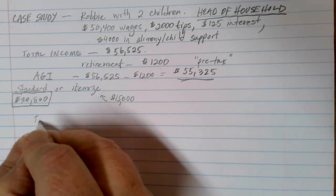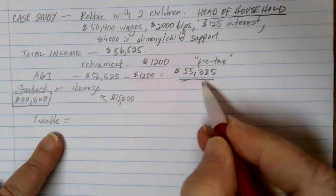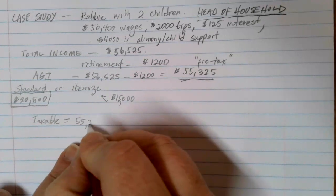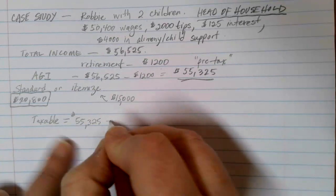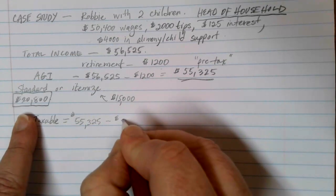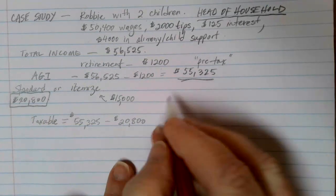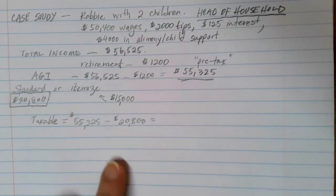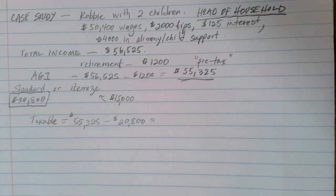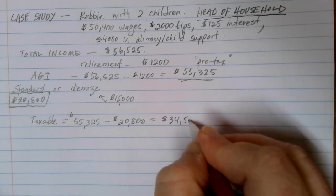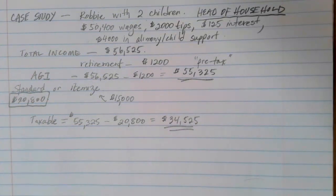Our taxable income is our AGI of fifty five thousand three hundred and twenty five dollars, minus the standard deduction. We're going to choose the twenty thousand eight hundred dollar head of household standard deduction instead of the itemized deduction. When we subtract that out, we end up with thirty four thousand five hundred and twenty five dollars — and this is the taxable income we'll look up on our tax tables.